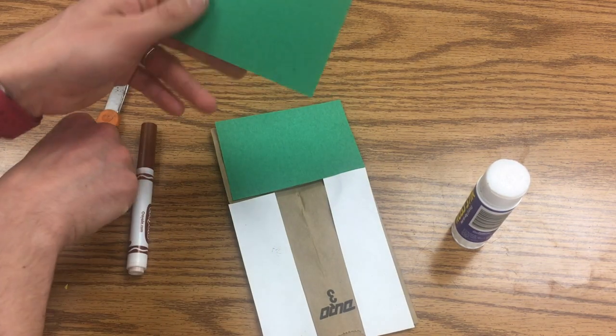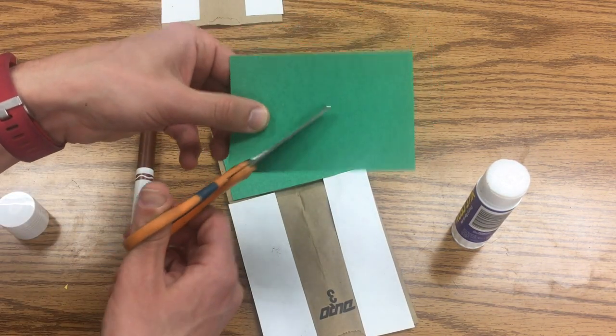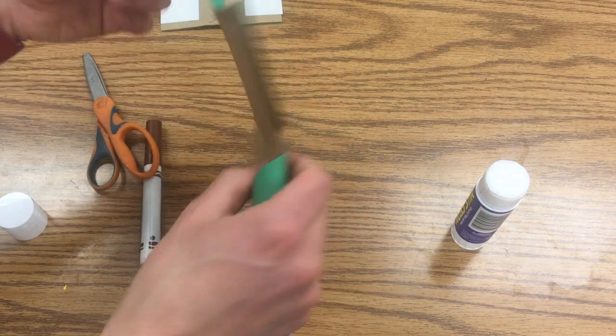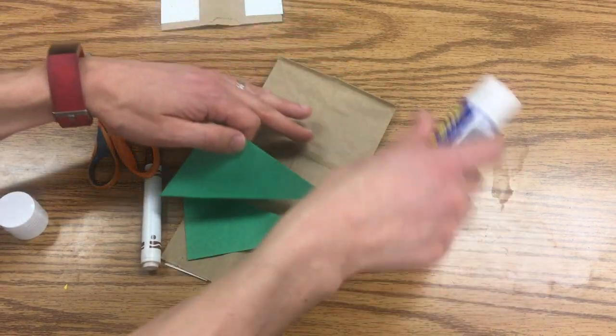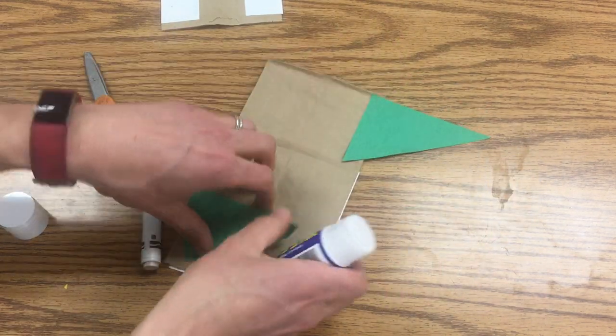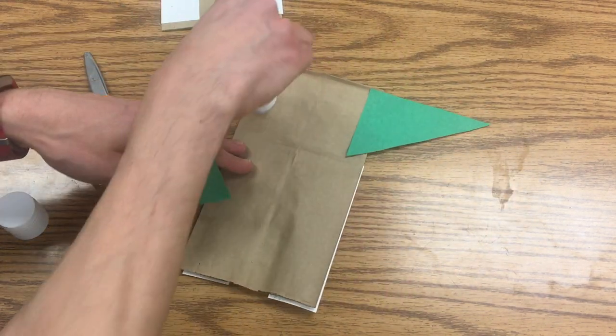Then I'm gonna take a green rectangle and cut diagonally, and then I'm going to turn this over and put just a line of glue here and let that hang out from the side. Another line of glue here.